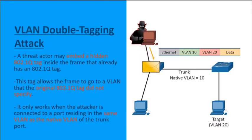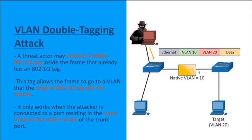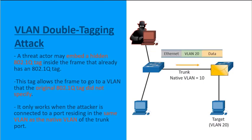When that message reaches the first switch, it sees the external header of VLAN 10, strips it off, and sends the traffic on its way. Since VLAN 10 is also the native VLAN, the switch removes the VLAN 10 header and moves the frame across the trunk link. As it crosses the trunk, the internal VLAN 20 tag still exists.